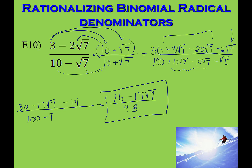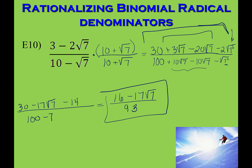The big takeaways from this last part of the lesson: when rationalizing, use the conjugate by changing the middle sign. Be very careful to FOIL correctly, then make sure you combine like terms and simplify as much as you can.